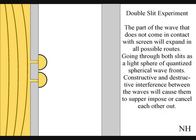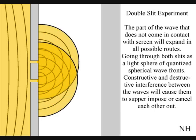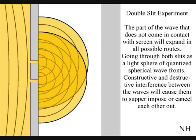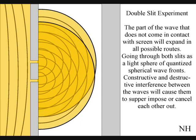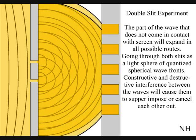The part of the wave that does not come in contact with the screen will expand in all possible routes, going through both slits as two light spheres of quantized wave fronts. Constructive and destructive interference between the waves will cause them to superimpose or cancel each other out. When this wave particle function comes in contact with the screen, it will collapse, creating new moments in time and new quantum particles in the shape of an interference pattern.